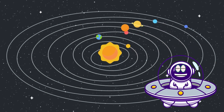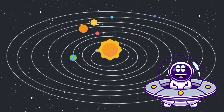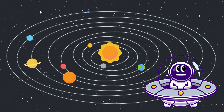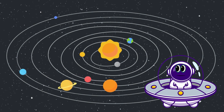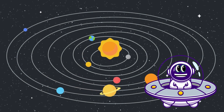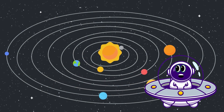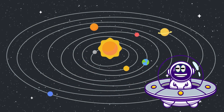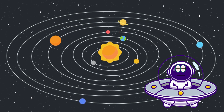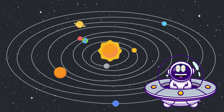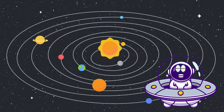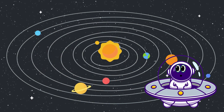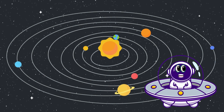The solar system consists of the Sun and a variety of celestial objects, including planets, moons, asteroids, and comets. The planets are divided into two categories: terrestrial planets, which are rocky, and gas giants.